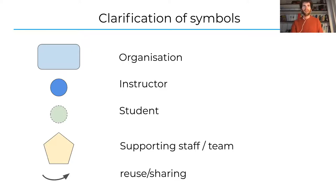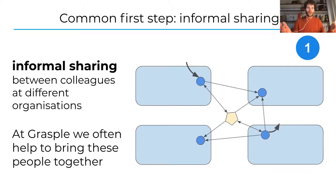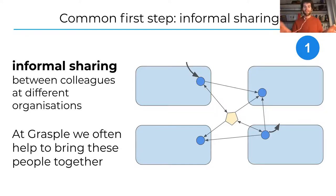The first pattern we often encounter is informal sharing. Colleagues at different institutions have created exercises and wonder if others have done the same. They're interested in using each other's work and open to sharing their own. We try to act as a liaison to bring these often disconnected efforts together, though it often stays informal. That's the first pattern: informal sharing.